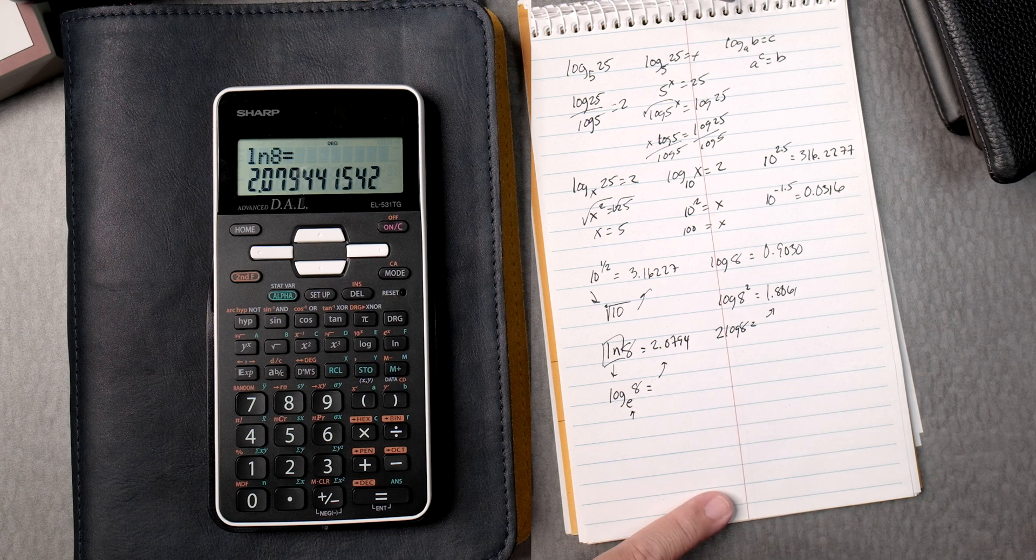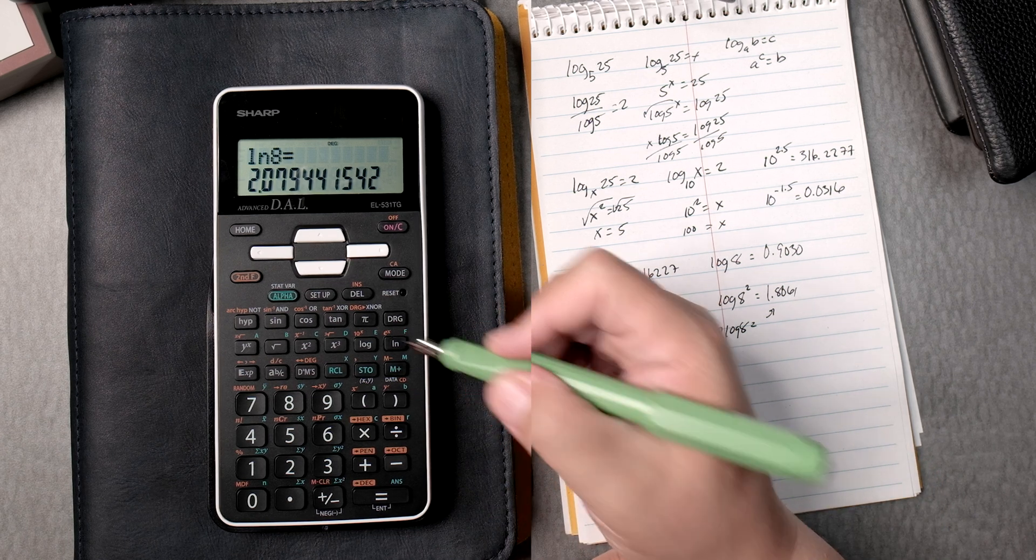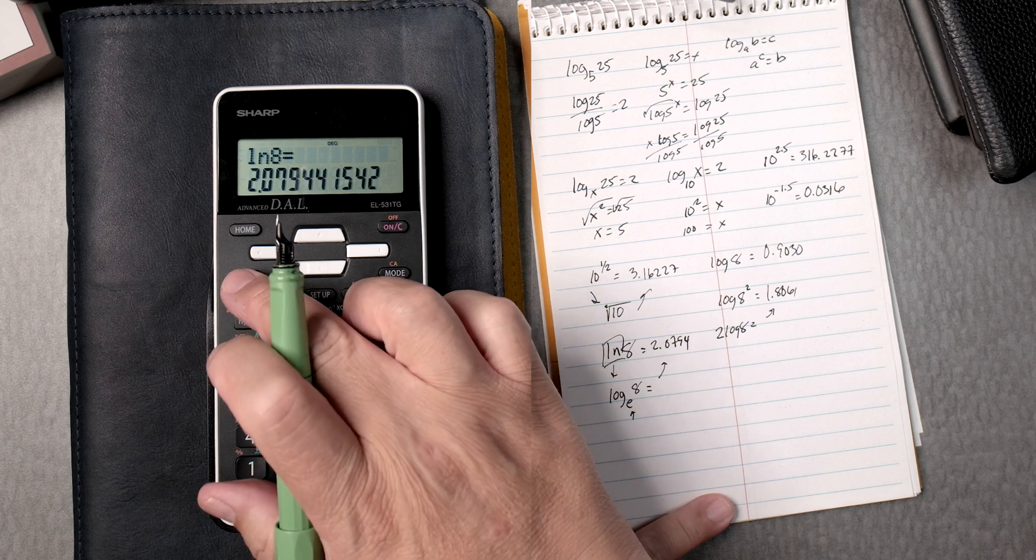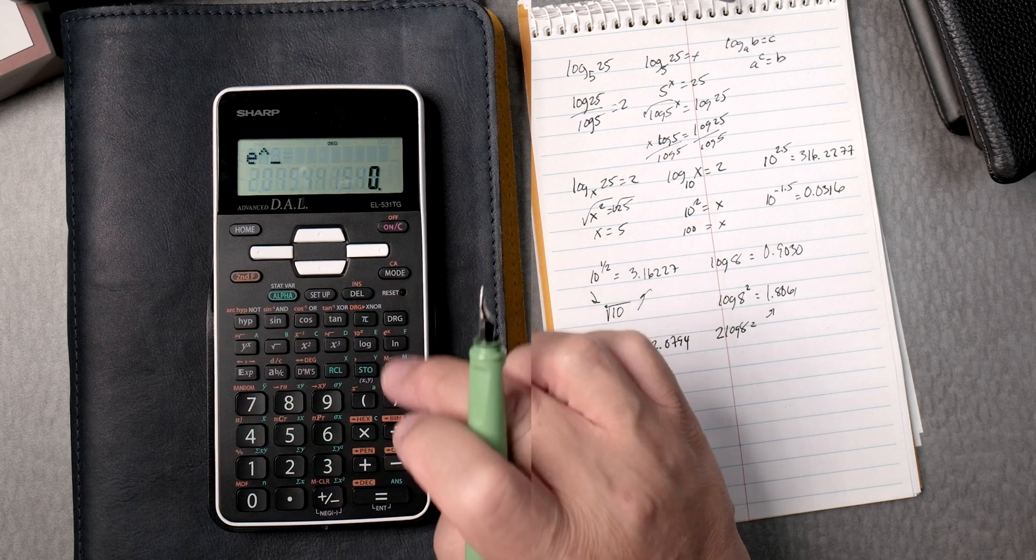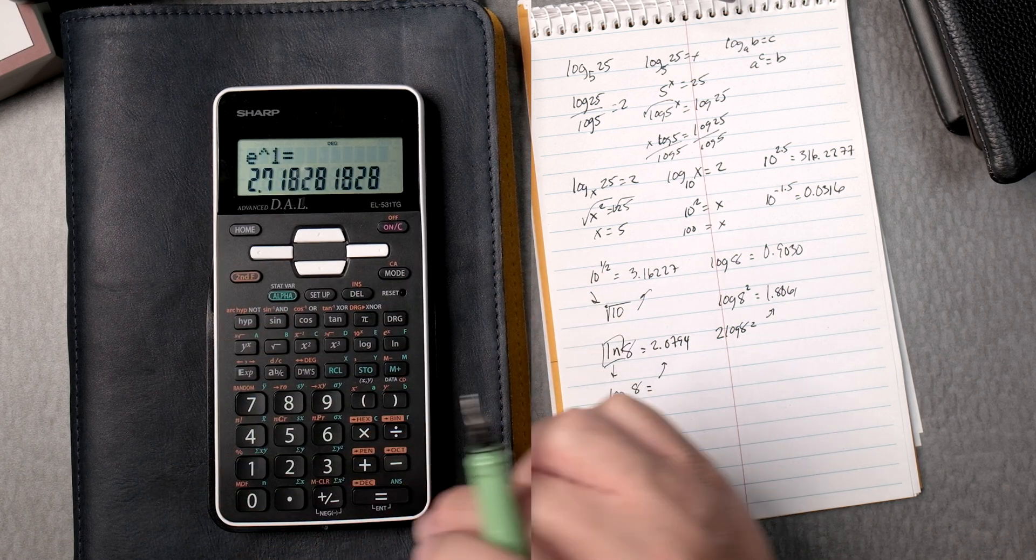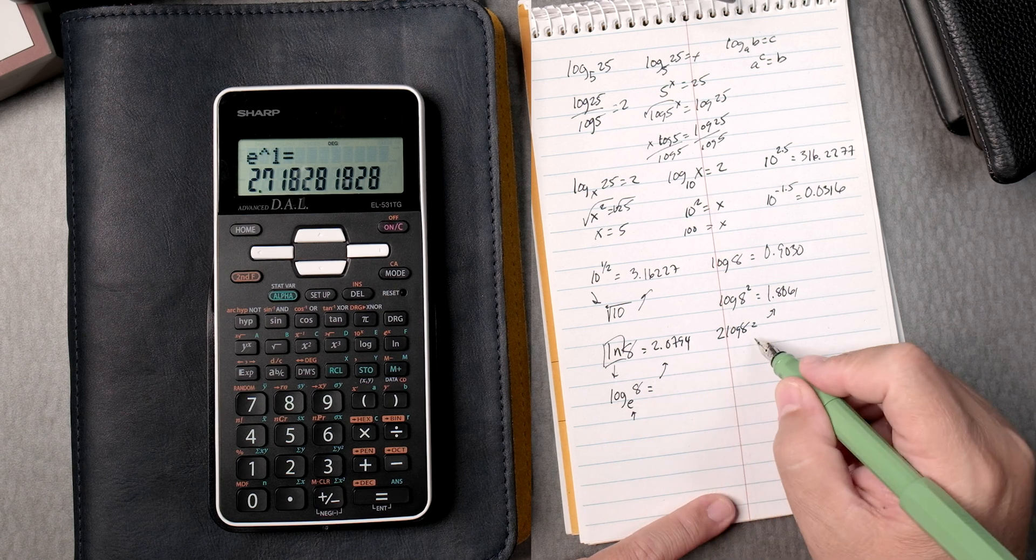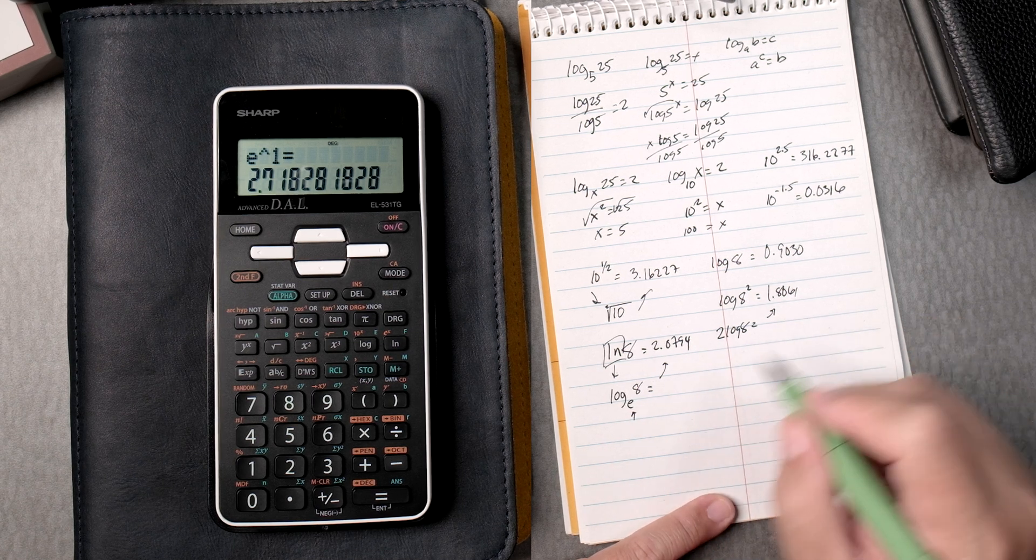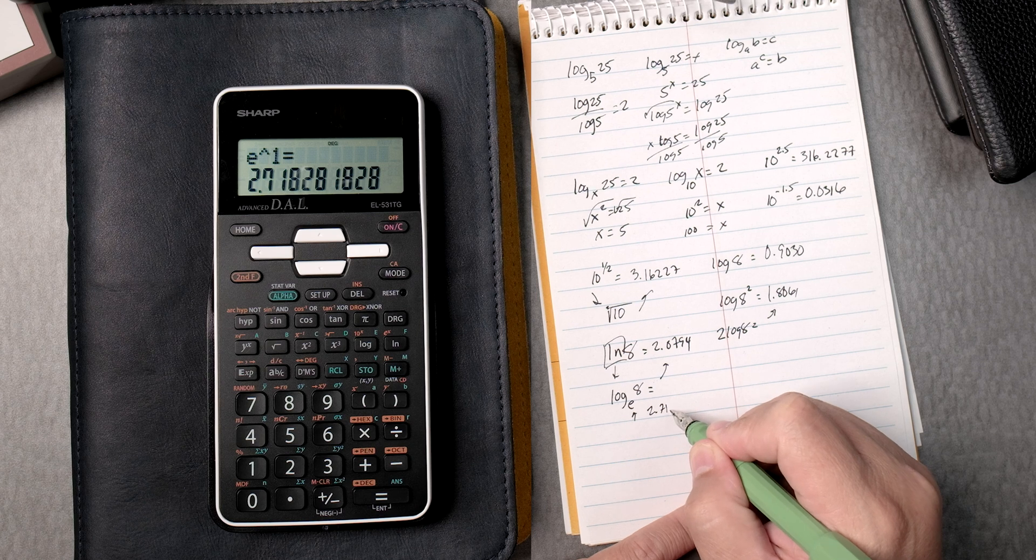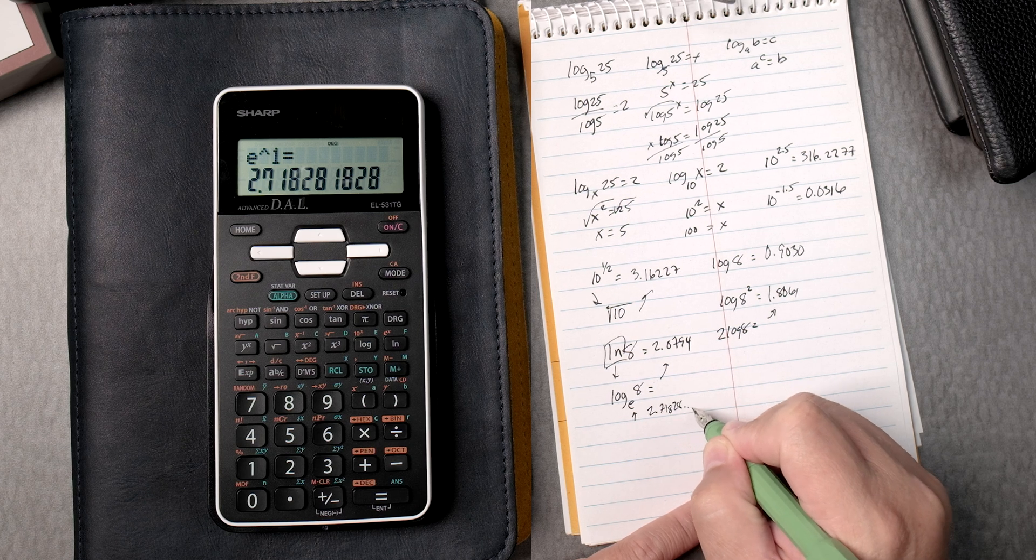e, you can find out e over here. You see e? We can go shift, natural log, natural log to give you e. Let's type a 1 and it gives you the value of e, right? Which is 2.71828 and it keeps on going.